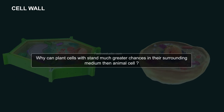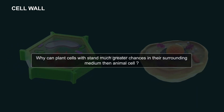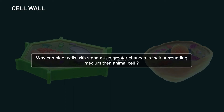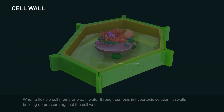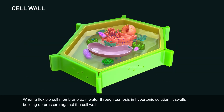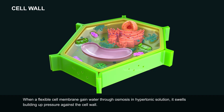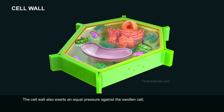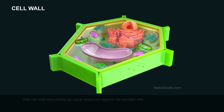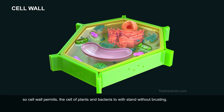Why can plant cells withstand much greater changes in their surrounding medium than animal cells? When a flexible cell membrane gains water through osmosis in a hypotonic solution, it swells, building up pressure against the cell wall. The cell wall exerts an equal pressure against the swollen cell, so the cell wall permits the cells of plants and bacteria to withstand without bursting.